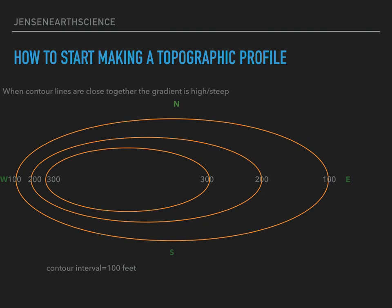Next thing to know is when contour lines are close together, the gradient is high or very steep, and that would be the west side of this contour map. When contour lines are far apart, the gradient is low or has a gentle slope, which would be the east side of this map.